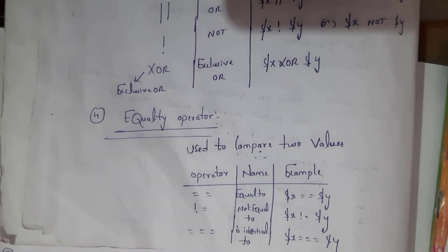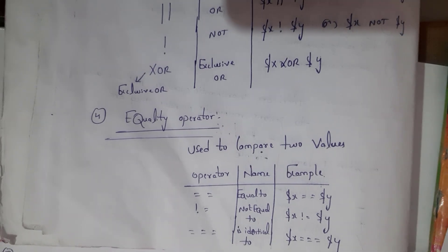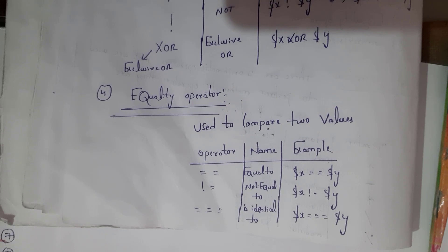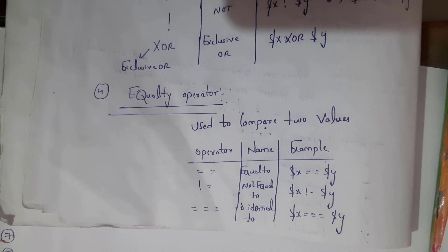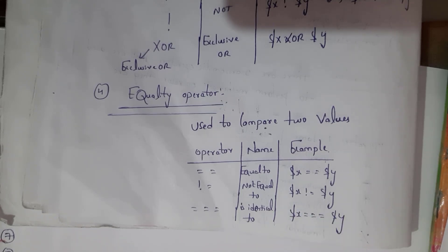The fourth one is the equality operator, used to compare two values. There are three types: equal to ('=='), not equal to ('!='), and identical to ('==='), where we use three equals symbols. These are the examples: $x == $y, $x != $y, and $x === $y.